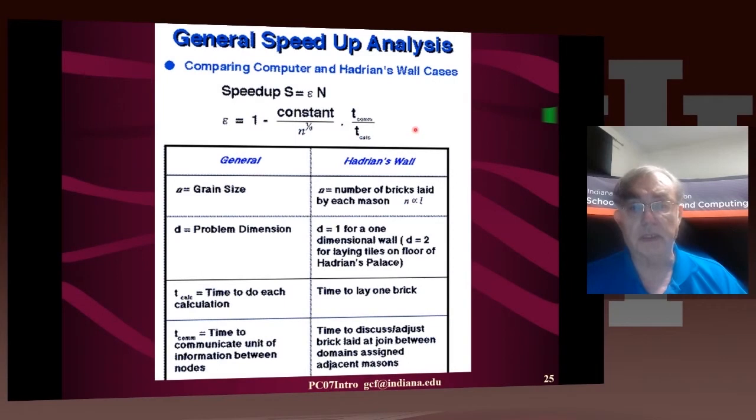Here's a comment on the general speedup analysis. It points out that you can always write the speedup S to be the efficiency times the number of processing nodes, either masons or cores, depending on whether you're doing the human problem or the computer problem. On general principles, this efficiency is some measure of the overhead. Here for computing is the communication time over the calculation time. For the mason is the overlap region divided by the length of the wall assigned to each mason. There's some constant which depends on the detailed analysis.